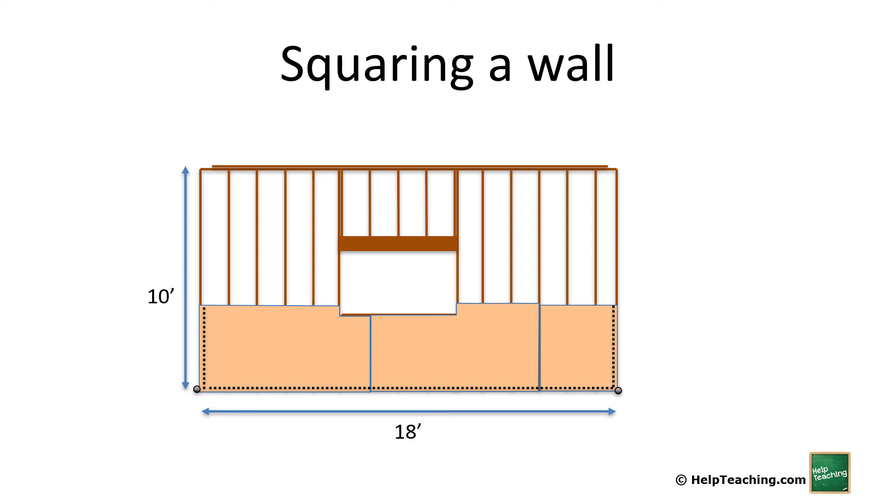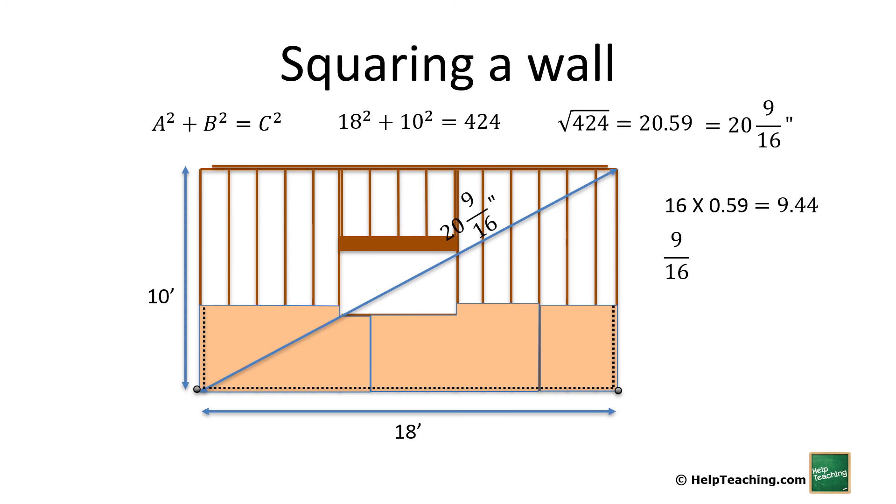Using Pythagorean Theorem again, we can do 18 squared plus 10 squared is 424. Square root of 424 is 20.59. Now most tape measures don't have 0.59 on them, so if we want to convert that into sixteenths, this is easy to do. 16 times 0.59 is 9.44. So if we round that off, it's roughly 9 sixteenths, so our diagonal measurement will be 20 and 9 sixteenths. Check our other diagonal, make sure it's the same, make any adjustments we need, and then we'll anchor those top corners as well.